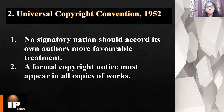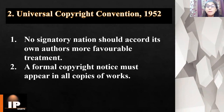The main features of the Universal Copyright Convention are: first, any signatory nation cannot give its own domestic authors more favorable treatment. Second, a formal copyright notice must appear in all copies of the work. According to this convention, the minimum term of protection should be the life of the author plus 25 years, and all adhering nations have to grant an exclusive right of translation for a seven-year period.